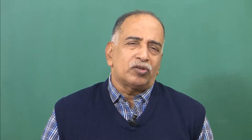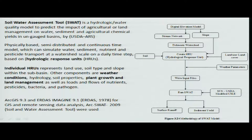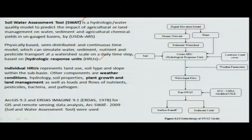One of the tools is the Soil Water Assessment Tool, which has been developed by the USDA. It incorporates meteorological parameters and terrain parameters. Calculations are based on the Hydrological Response Unit (HRU). The response units include meteorological conditions such as rainfall and temperature, as well as terrain parameters covering hydrology, soil parameters, and plant growth.